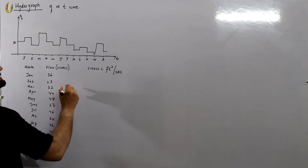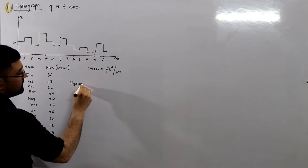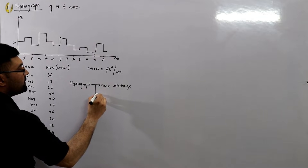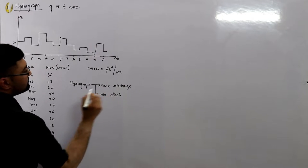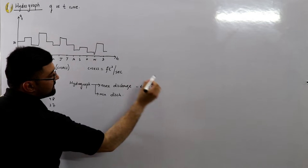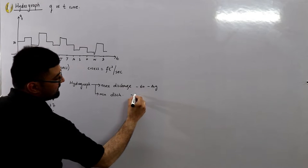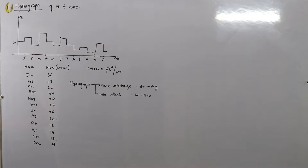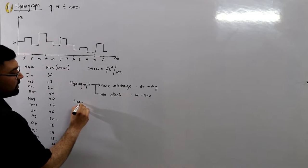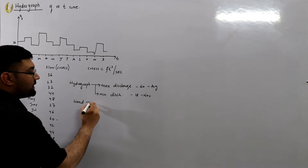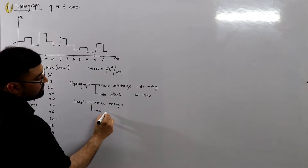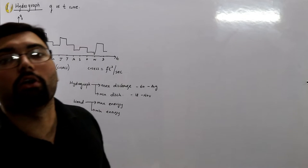Directly from the hydrograph you can observe two things: number one, the maximum discharge, and number two, the minimum discharge. For instance, the maximum discharge is 60 in August, and the minimum is 18 in November. With a given water head, you can find the maximum and minimum energy corresponding to these discharges.